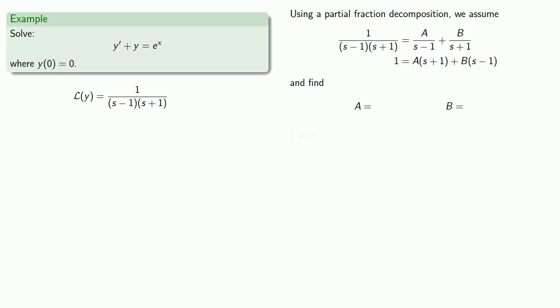If S equals negative 1, our equation becomes, which tells us that B equals minus 1 half. Likewise, if S equals 1, our equation becomes, which tells us that A is equal to 1 half.